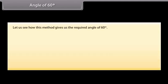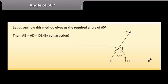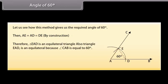Now let us see how this method gives us the required angle of 60 degrees. Join DE. Then by construction, AE equals AD equals DE. Therefore triangle EAD is an equilateral triangle. Also, angle CAB is equal to 60 degrees.